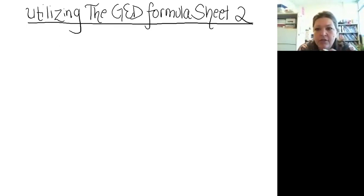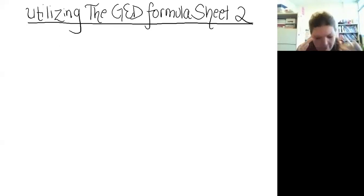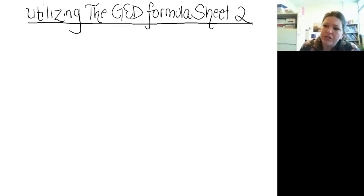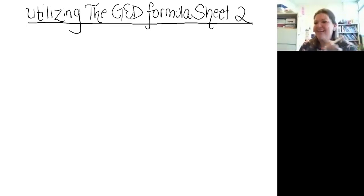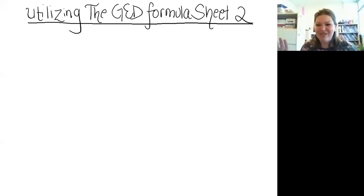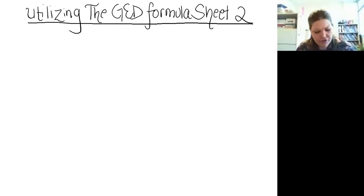Last time we looked at some simpler examples of utilizing the GED formula sheet — one and two-step equations. Now that we've got the skills from solving multi-step equations, I want to look at some of the nastiest examples that might come up on the GED formula sheet, where you'll have to use all your best algebra skills. There's no new information — we're just putting together things we've already learned in trickier, more challenging contexts.